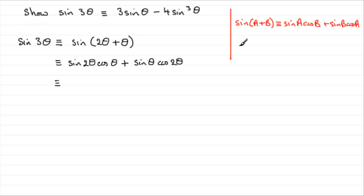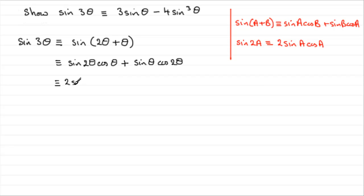Now, another identity that you should know is that the sine of 2a — the double angle — is identical to 2 sine a cos a. In this particular case, a is θ, so the sine of 2θ is 2 sine θ cos θ. I'm going to write that in place of sine 2θ: 2 sine θ cos θ, and then that's all multiplied by cos θ, giving cos squared θ.